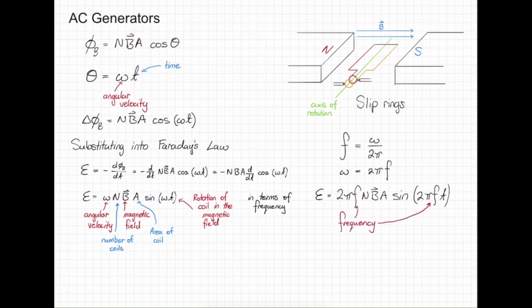So in this video, we've derived our equation for the EMF produced by an AC generator. We've talked about what an AC generator is, and how it is different from a DC motor. In our next video, we're going to be continuing looking at AC generators, looking into the current produced, as well as the relationship between the magnetic flux, current, and EMF. See you in the next video.